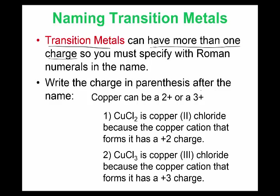For example copper can be either 2+ or 3+. If you have copper and 2 chloride ions — CuCl2 — the 2 came from the charge on copper, meaning copper is 2+, and chloride is always 1-. If you have CuCl3, that 3 indicates copper had a 3+ charge. So you'd write copper(III) chloride. The chloride part stays the same.